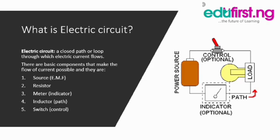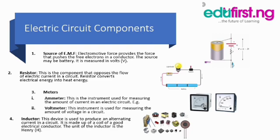To have a better understanding, let's look at the function of each component. One: source. This is the electromagnetic force that provides a force to push free electrons in a conductor. The source may be a battery, and it is measured in voltage. You can see the battery symbol on the diagram. Two: resistor. This is used to oppose the flow of electric current in a circuit. A resistor converts electrical energy to heat energy.